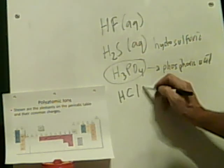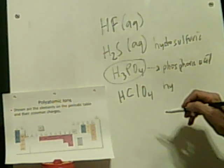HClO4 — this is going to be a hydro chlorate acid, I'm going to guess. I'll say hydrochlorate acid. The correct answer is perchloric acid — that makes sense from the perchlorate ion we discussed earlier.